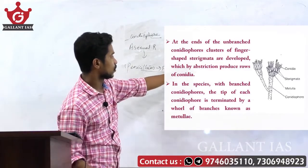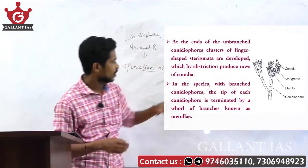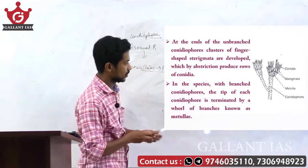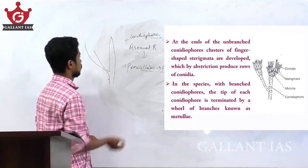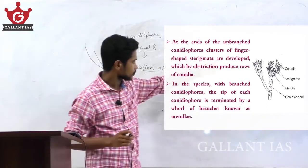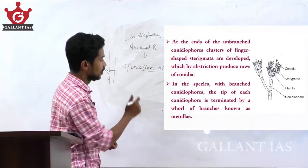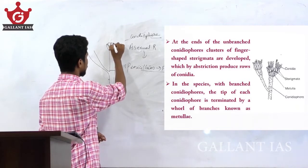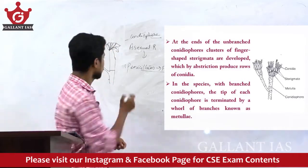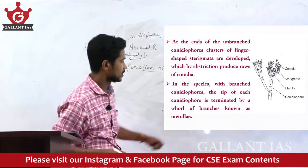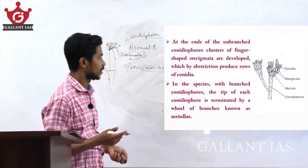You can see the figure of the conidiophore. The finger-shaped structures are called sterigmata. These sterigmata, by abstraction, produce rows of conidia. The conidiophore may be branched, and these finger-shaped clusters called sterigmata arise from the branches.